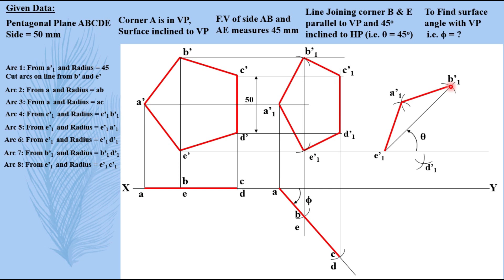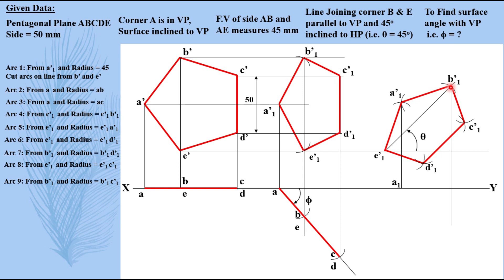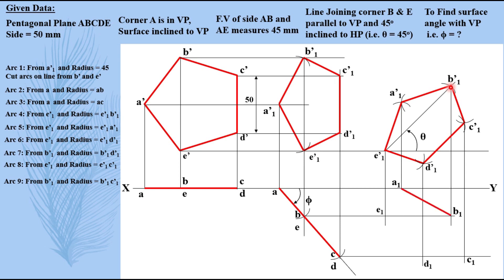Now for the remaining point C: take E1' to C1' in compass, keeping compass here, cut an arc. Then take B1' to C1' as radius, keeping compass here, cut it and name it C1'. Now join in sequence: B1' to C1', C1' to D1', D1' to E1'. Taking projectors down — A1', B1' intersection is at this location, B1', C1', D1', and E1' likewise. Join in sequence: A to B, B to C, C to D, D to E, and E to A. This completes the solution.